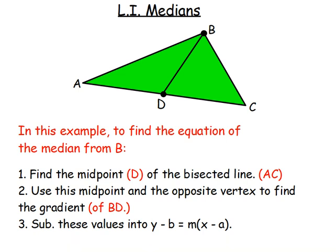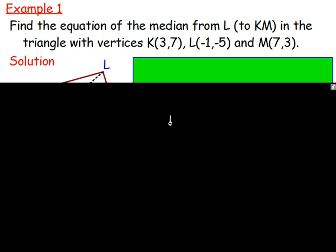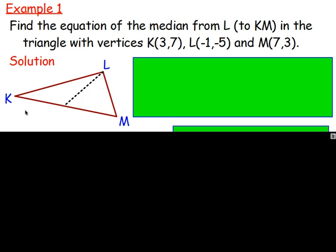Example one: find the equation of the median from L to KM in the triangle with vertices K, L, and M. A lot of the time I like to do a small sketch of a triangle — it doesn't have to be on graph paper or drawn brilliantly, just a sketch. Put in K, L, and M, then draw in the median going from L to the midpoint of the opposite side.